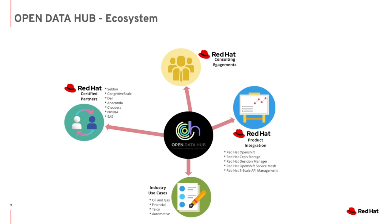We also work with third-party vendors to get them certified to use UBI images and certified operators. These partners become certified partners that provide support for their tools integrated with Open Data Hub, such as Seldon for Model Serving, NVIDIA for GPU, and Cognitive Scale for Trusted AI. As part of the ecosystem, we also have a team dedicated to AI/ML consulting services to help our customers succeed in their digital transformation plans and accelerate development and time to market.